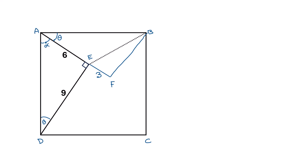Now look at triangle ADE and triangle AFB. Both of these two triangles have a common angle theta. The length AD equals AB, and DE is 9 units, and AF is also 6 plus 3 equals 9 units.